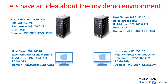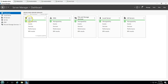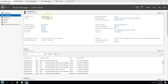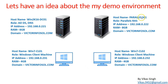Let's see what we have in this demo environment. We are going to use four virtual machines. The first machine is win2k16dc01, which is our Active Directory server, and my domain name is victorinfosol.com. This is the same domain controller we've been using since our first video. It has Active Directory and DNS roles installed.